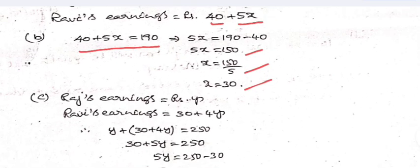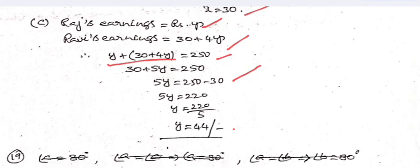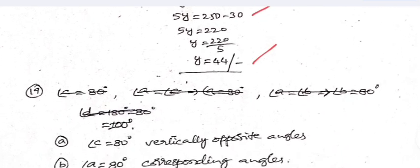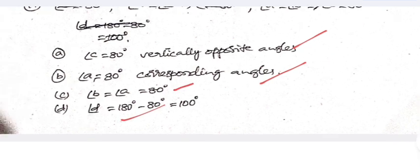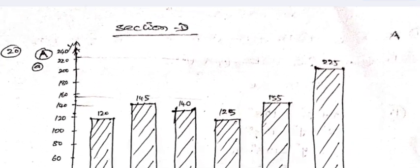For the next part, let Raj's earnings be y rupees; then Ravi's earnings are 30 plus 4y. Adding both their earnings gives 250, so 5y equals 250 minus 30, giving y equals 44 rupees. Question 19: angle c is 80 degrees — vertically opposite angles; angle a is 80 degrees — corresponding angles; angle d equals 180 minus 80 degrees.